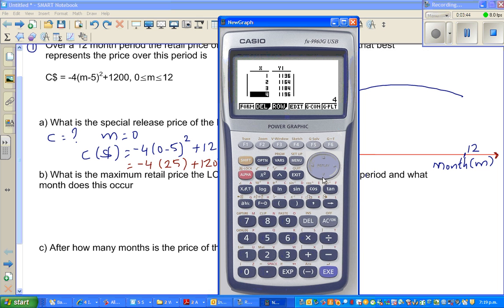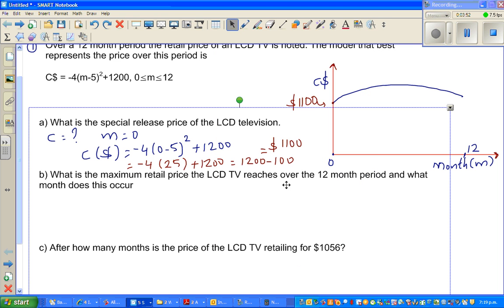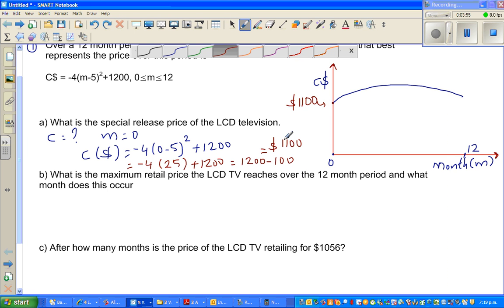You go to table. So this is when m is 0, you started at 1100. That's what we got. So if you scroll down, you can see the prices. So our answer is $1100. That's our first answer.